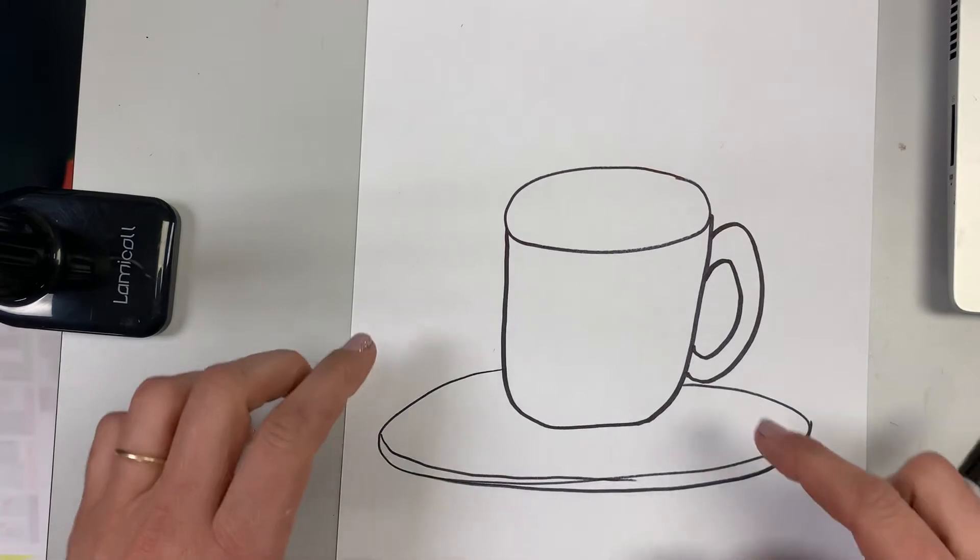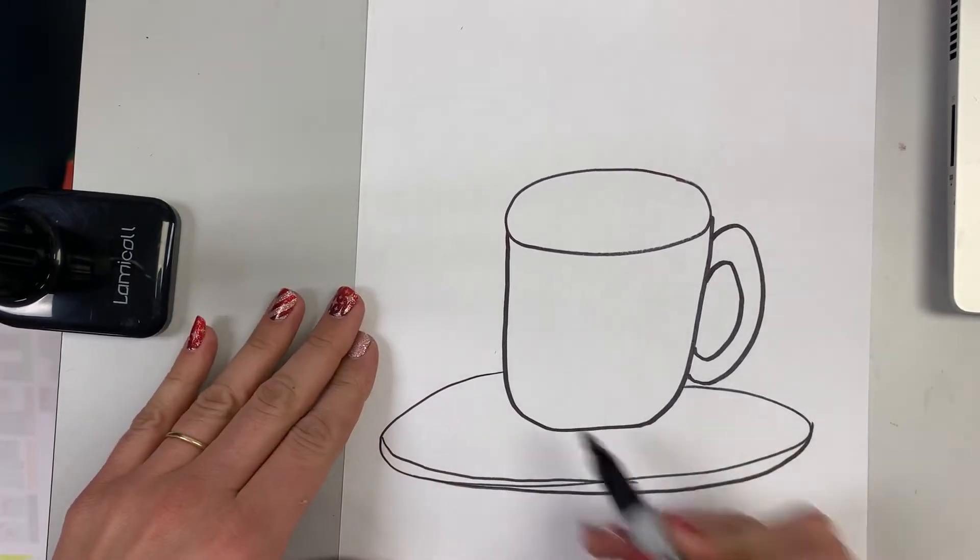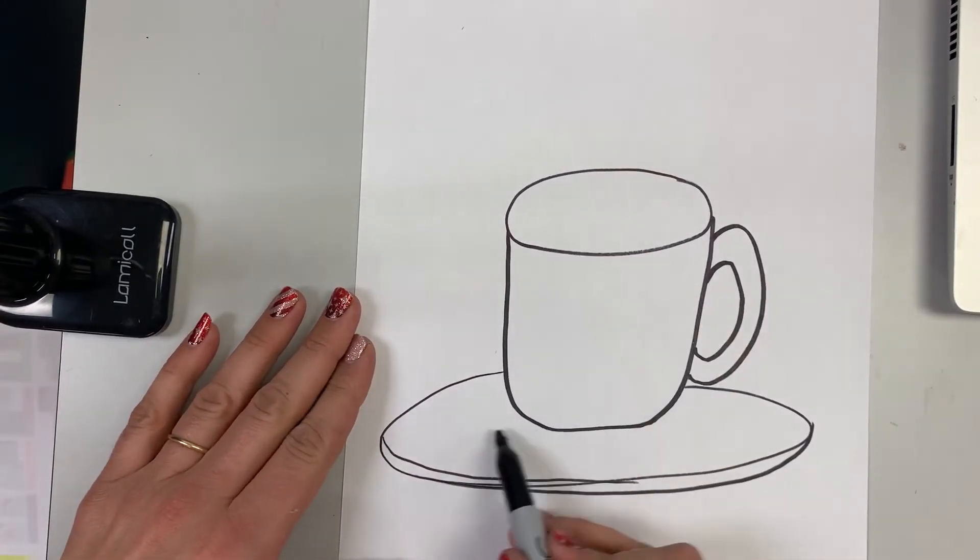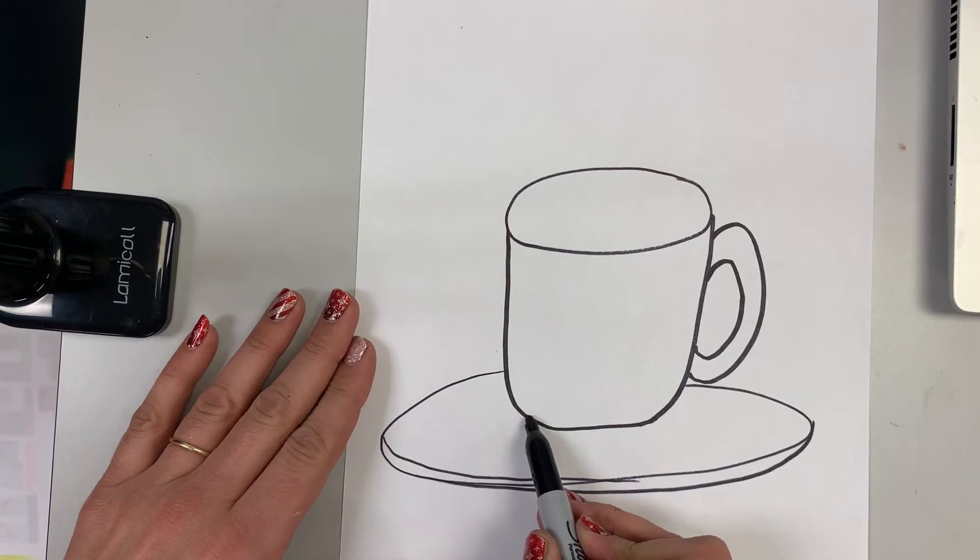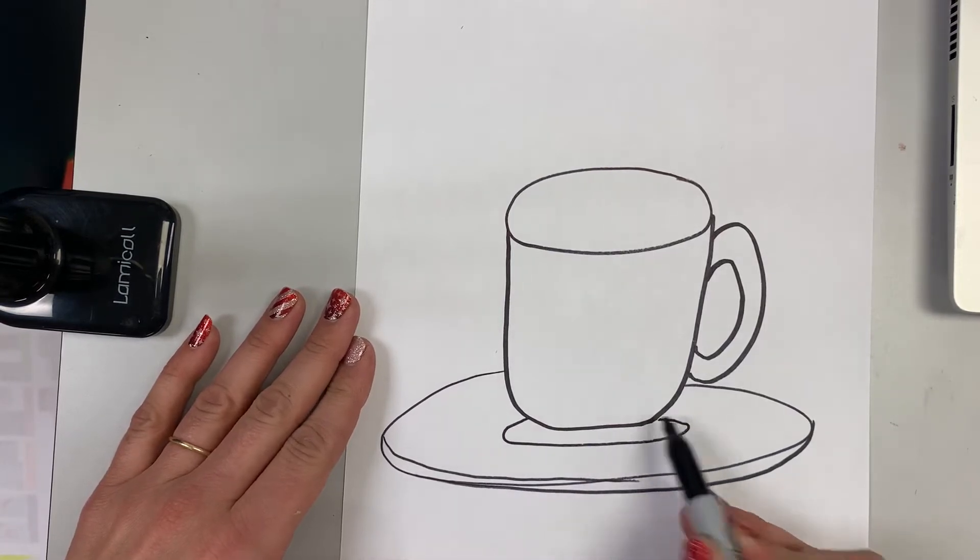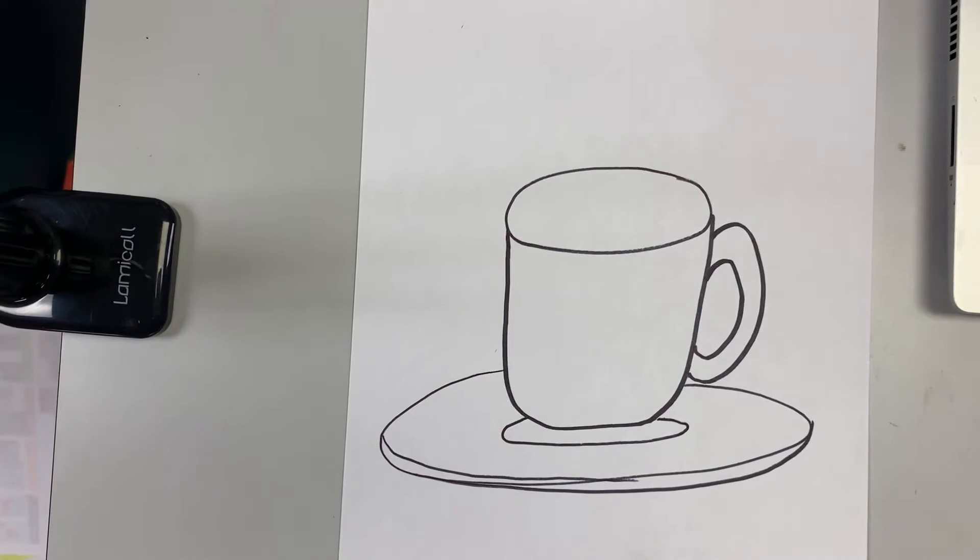All right, so nice big oval. And then inside of this little space I'm going to do one more oval here. So it looks like my plate. So my cup is sitting on my plate.